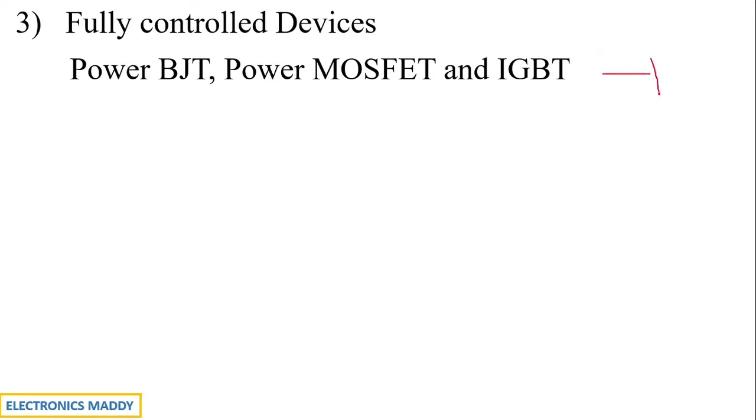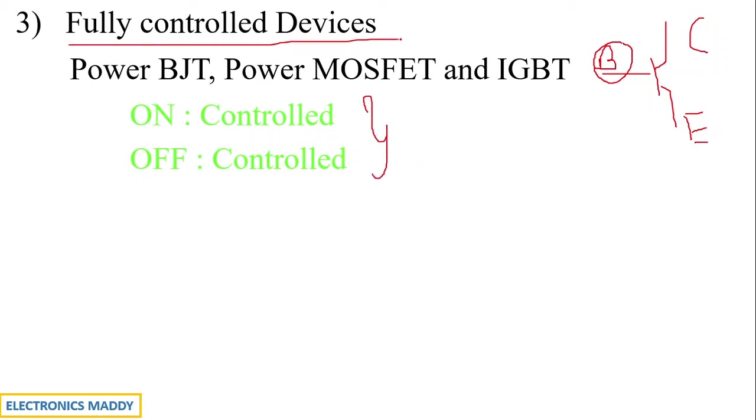For example, if you're looking at the symbol of a transistor, you have base terminal, you have collector and then you have emitter. So by controlling base terminal, you will be able to control the turn on of these devices and by controlling the base terminal, you will be able to turn these devices off as well. So both on and off is controlled and that is why they come under fully controlled devices.